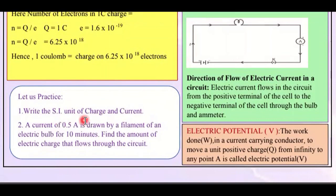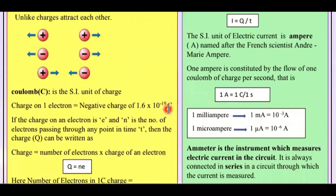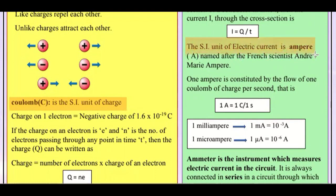Now let's move on to your worksheet questions — easy questions, you don't have to worry. The first question is: write the SI unit of charge and current. This is a very direct question. The SI unit of charge is coulomb, and the SI unit of electric current is ampere (capital A). This is your answer to question one.